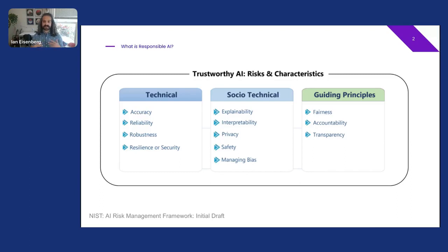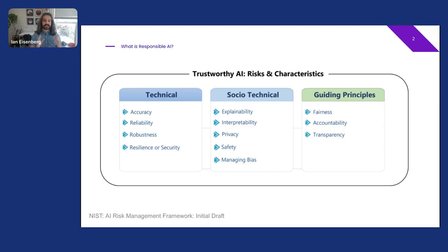Let's look at a specific instantiation of responsible AI tenets. Here we see a proposal from the US standard setting body NIST. One nice aspect of this taxonomy is that they separate principles into three categories: technical, socio-technical, and guiding.